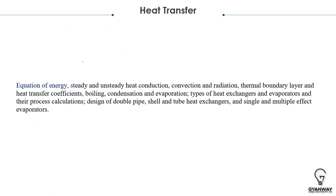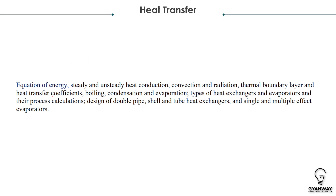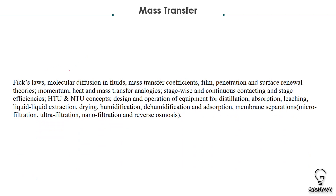Heat Transfer is one of the easiest core Chemical Engineering subjects and has a weightage of 8 to 10 marks. Topics include the three major modes — heat conduction, convection, and radiation — as well as thermal boundary layer, boiling, condensation, heat transfer coefficients, evaporation, double pipe heat exchangers, shell and tube heat exchangers, evaporators, and their design. Both numerical and conceptual questions are asked.